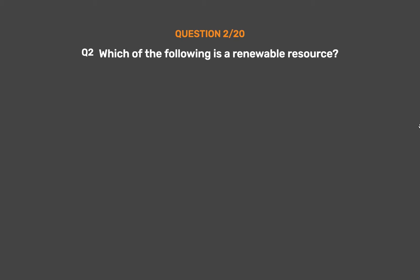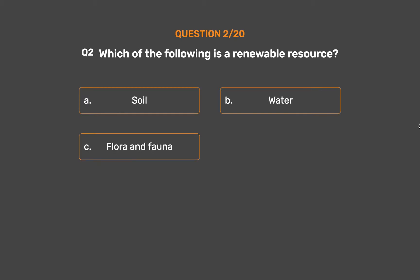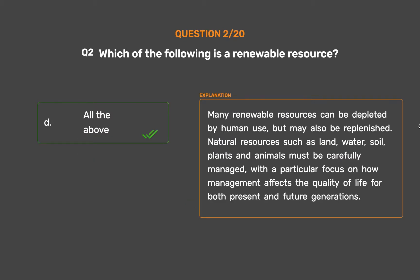Question number two: which of the following is a renewable resource? Option A: soil. Option B: water. Option C: flora and fauna. Option D: all the above. The correct answer is option D, all the above. Many renewable resources can be depleted by human use but may also be replenished. Natural resources such as land, water, soil, plants, and animals must be carefully managed with a particular focus on how management affects the quality of life for both present and future generations.